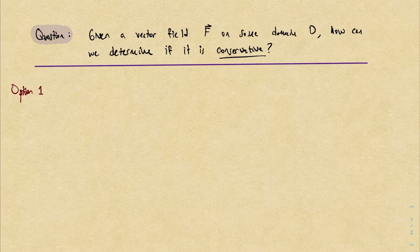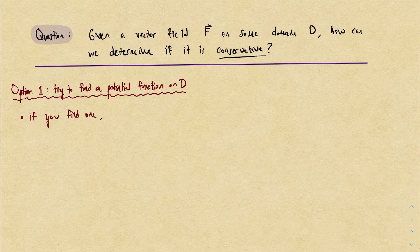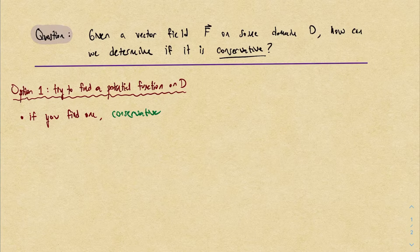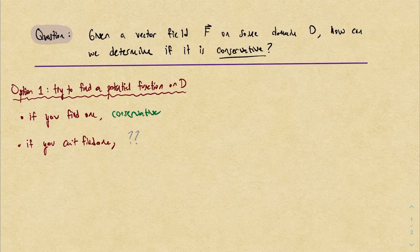One option is to use the definition of being conservative and try to find a potential function. If you can find a potential function on your domain, you're done — it's conservative. But oftentimes this is difficult, and if you struggle and can't find one, it doesn't mean that one doesn't exist. It just means that you can't find it. So in general, this option only works if you can find a potential function.